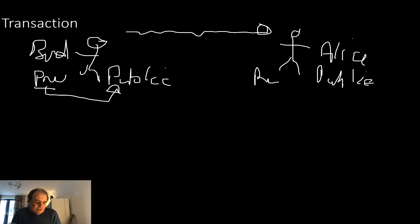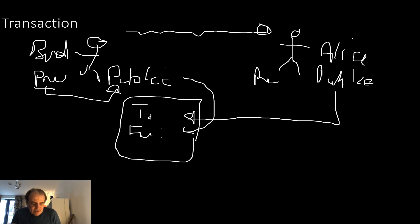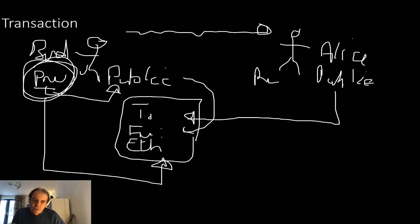When Bob wants to send Alice some cryptocurrency, he will get Alice's public ID, which is derived from her public key — that becomes the 'to' field. The 'from' field will be his public address. That becomes a transaction along with the amount of cryptocurrency to transact. Then we take Bob's private key and create a digital signature for the transaction.